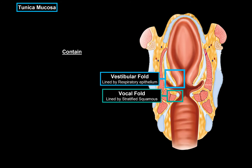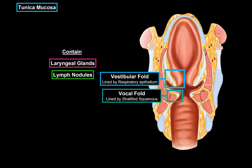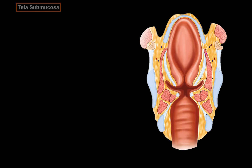In chronic smokers and people who use their voice a lot, like singers, the respiratory epithelium lining the vestibular folds are often damaged and replaced by stratified squamous epithelium, which makes them more susceptible for lower respiratory tract infections, since the cilia of the respiratory epithelium are gone. The tunica mucosa also contains laryngeal glands lubricating the surface, as well as small lymph nodules for immunity.